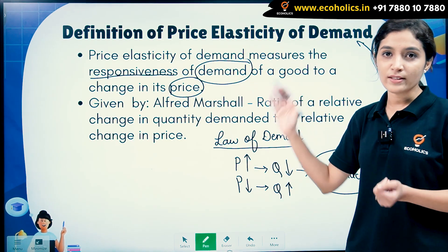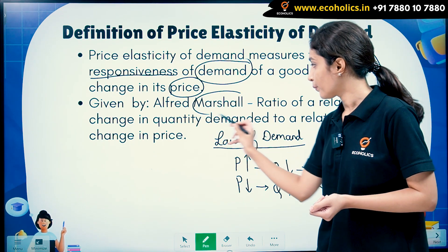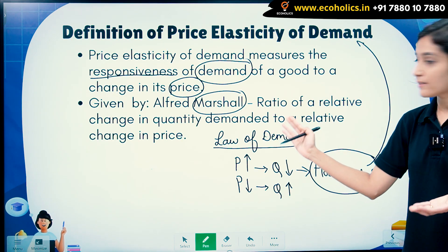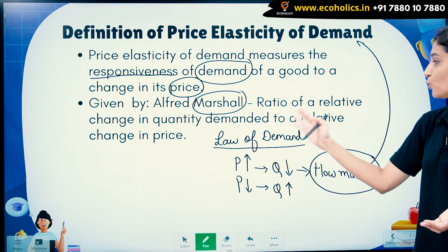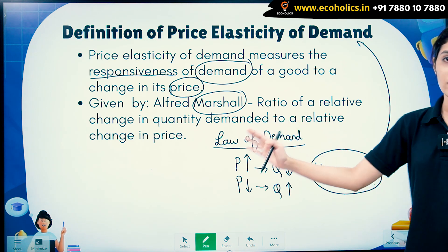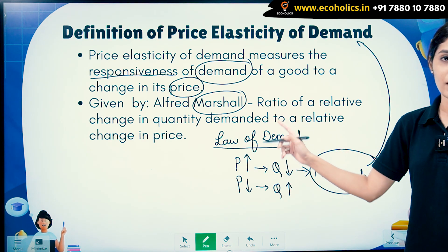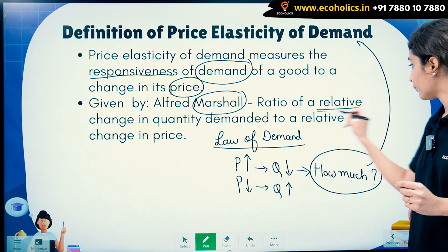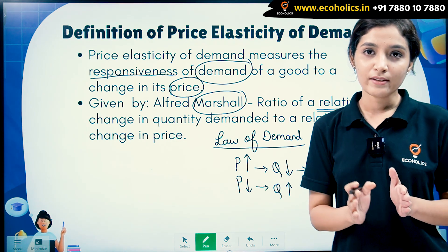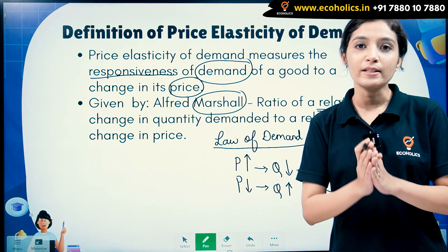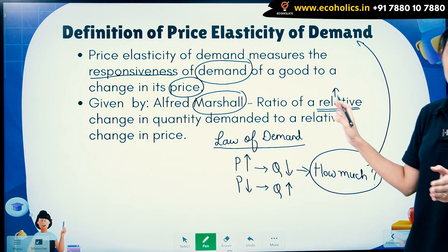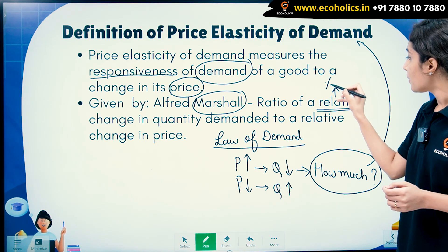The concept of price elasticity of demand was given by Marshall. According to Marshall's definition, price elasticity of demand is a ratio of a relative change in quantity demanded to a relative change in price. The keyword in Marshall's definition is 'relative'. When we talk about relative change, it basically means that we are going to measure our change in percentage terms.